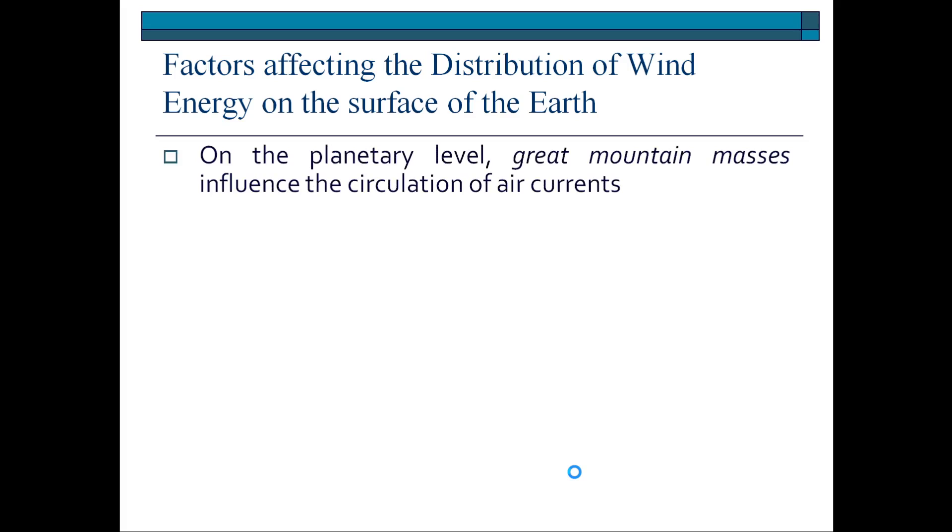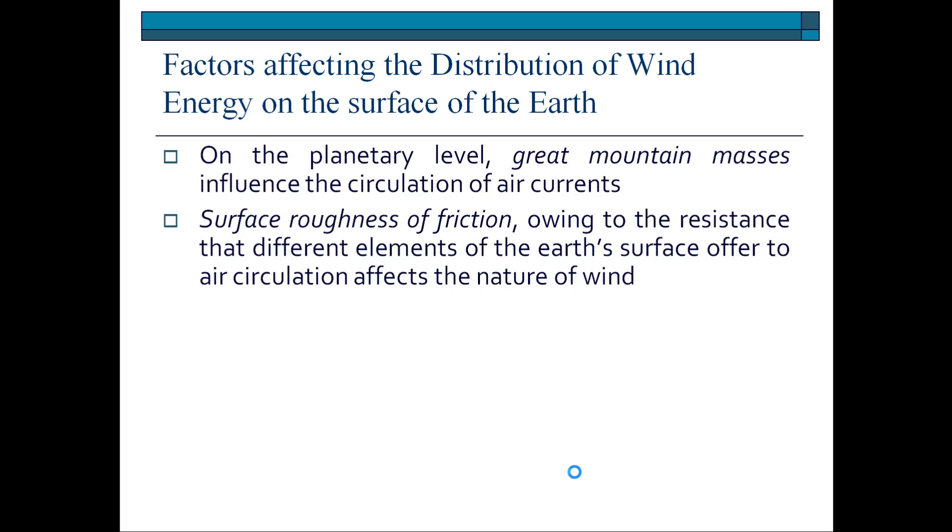On the planetary level, the great mountain masses influence the circulation of air currents. It will stop or allow through the passes movement of air. Then the surface roughness of friction - the first factor is great mountain masses, second factor is surface roughness of friction owing to the resistance that different elements of the earth's surface offer to the air circulation affects the nature of wind.